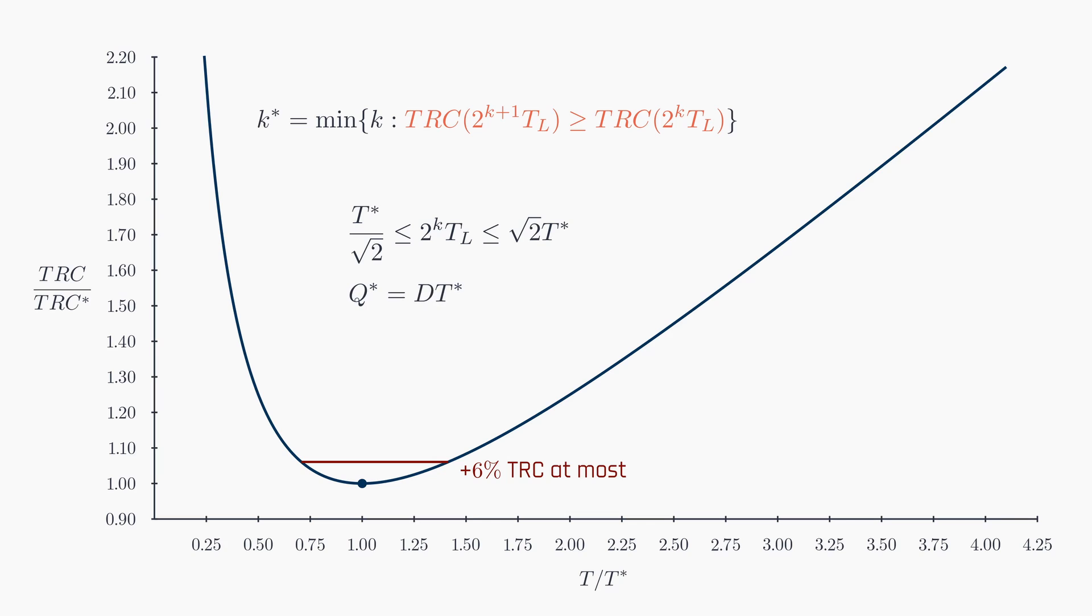Given that q and t are directly linked by this equation, the inequality suggests a similar variation for q. This proves that the total relevant cost could increase by no more than 6%. To identify an appropriate powers of 2 policy, we can utilize this expression. We'll demonstrate how to apply this formula in a subsequent video.